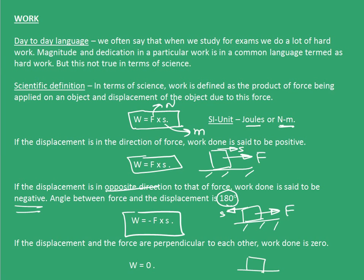For example, if I am applying a force vertically on the block and the block is moving in the right direction, then this is my displacement direction and this is my force acting on the block. In this case, work done is zero.